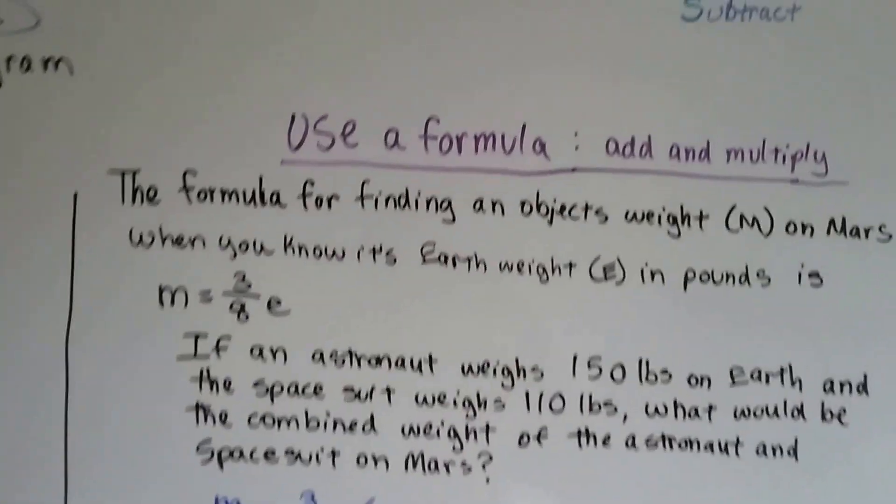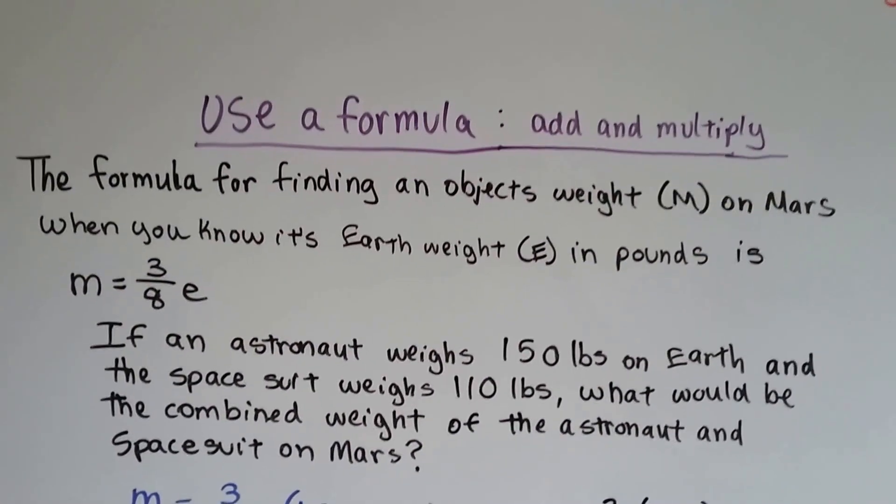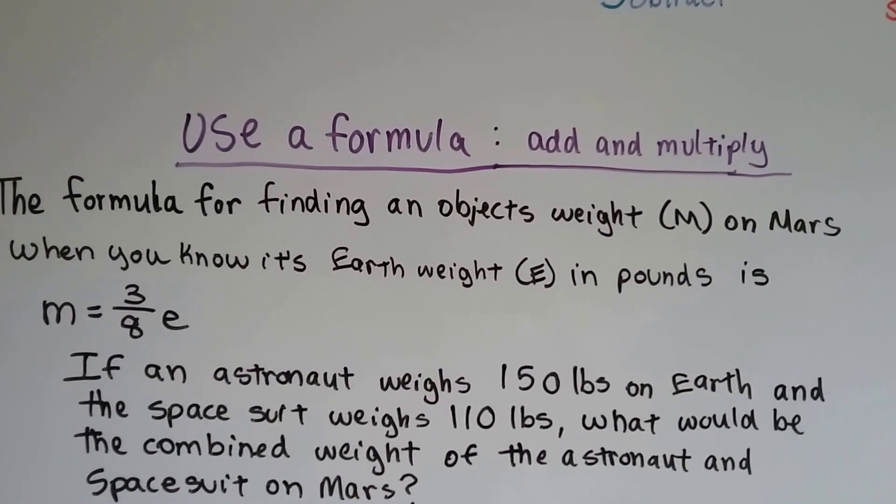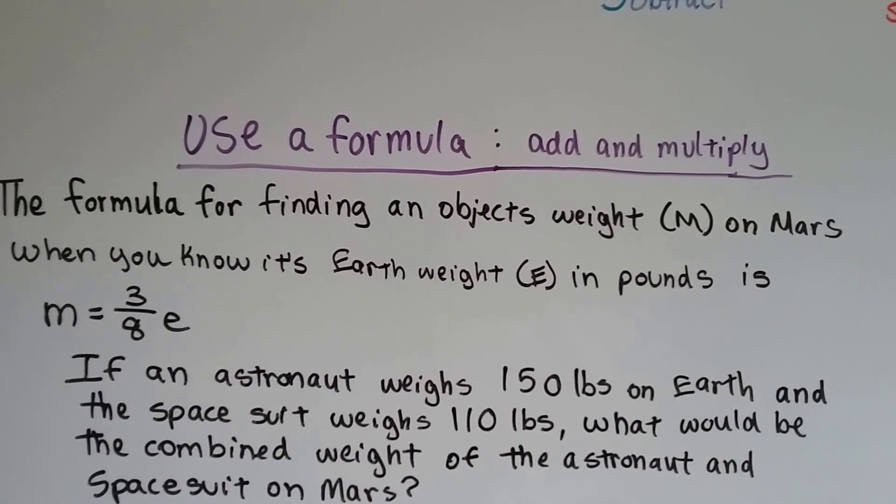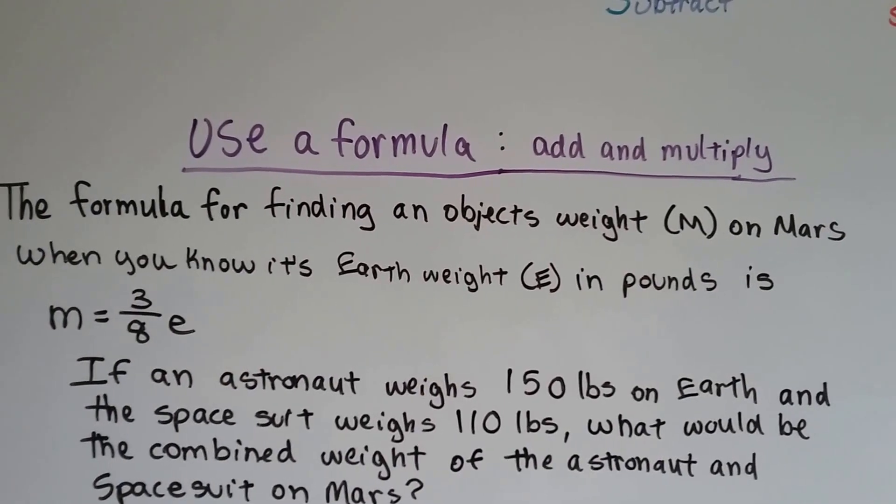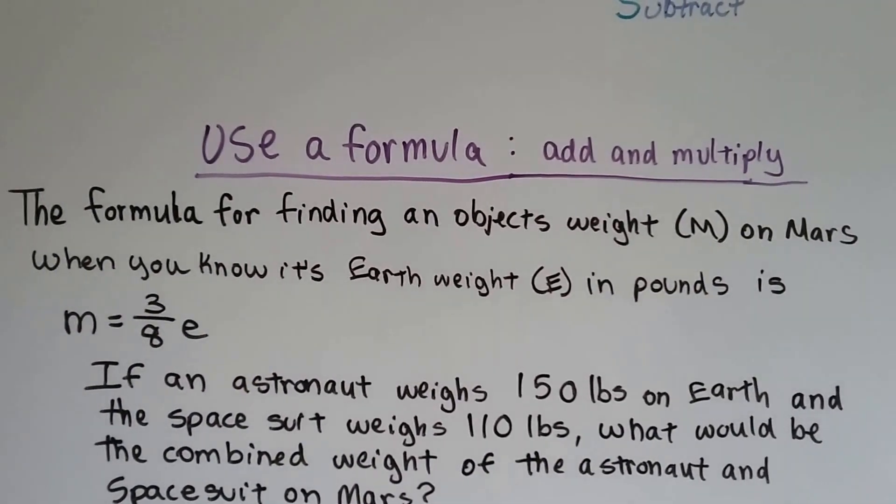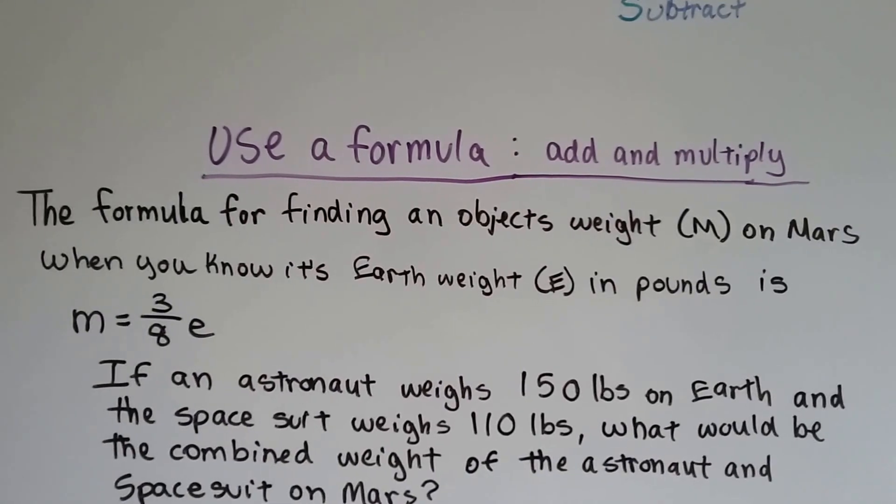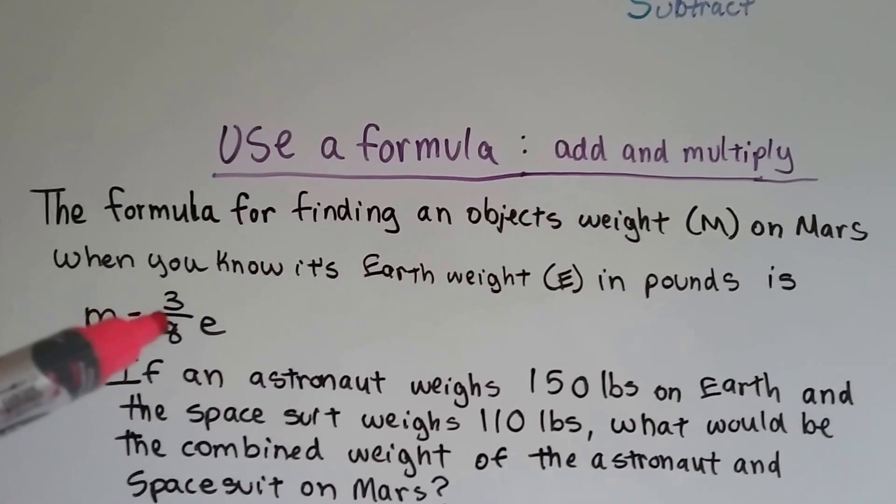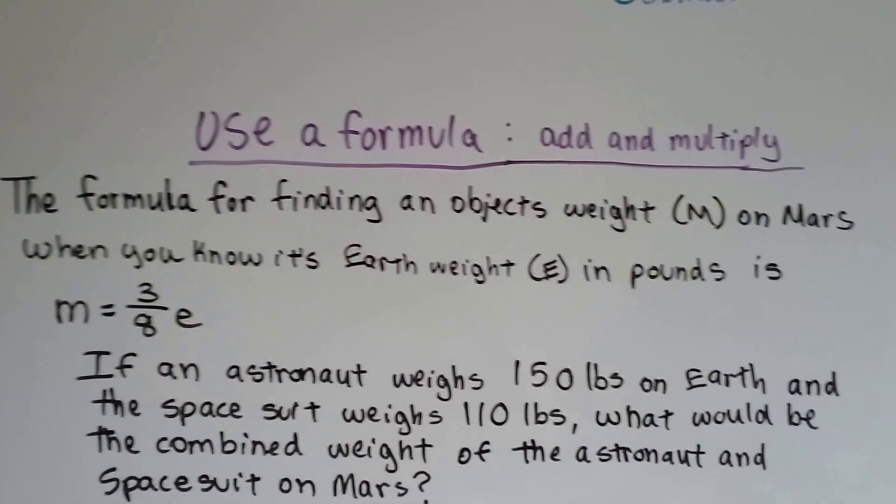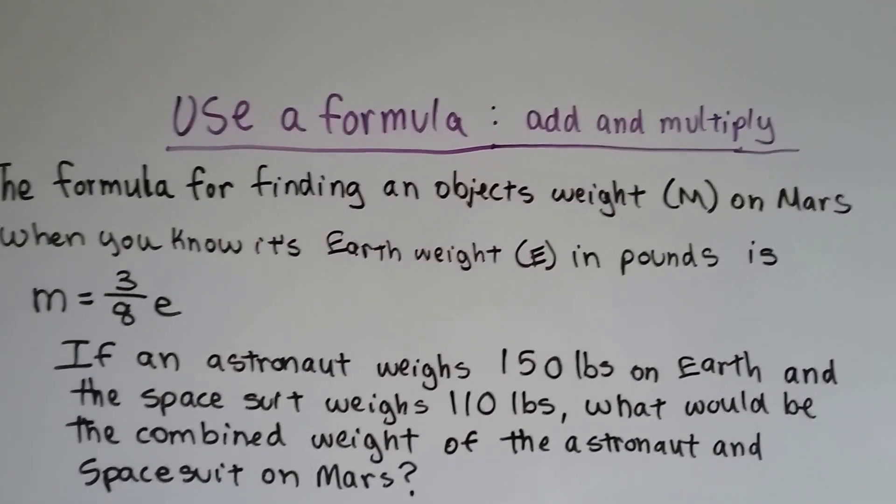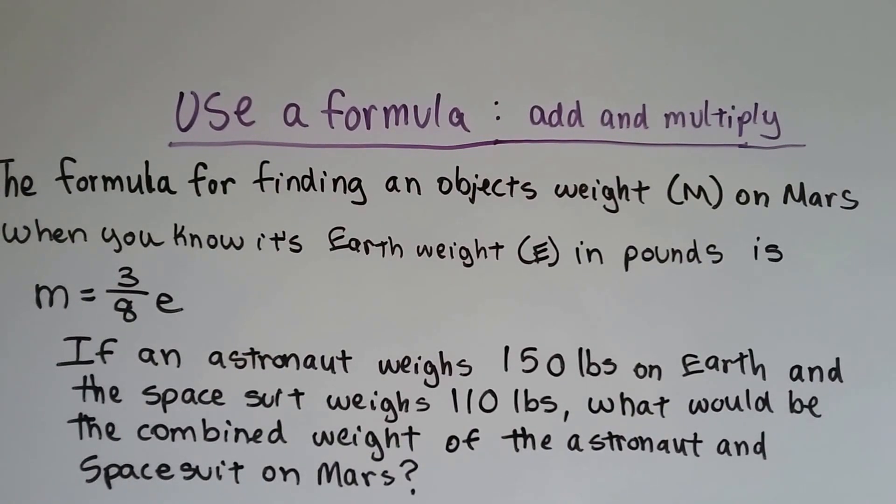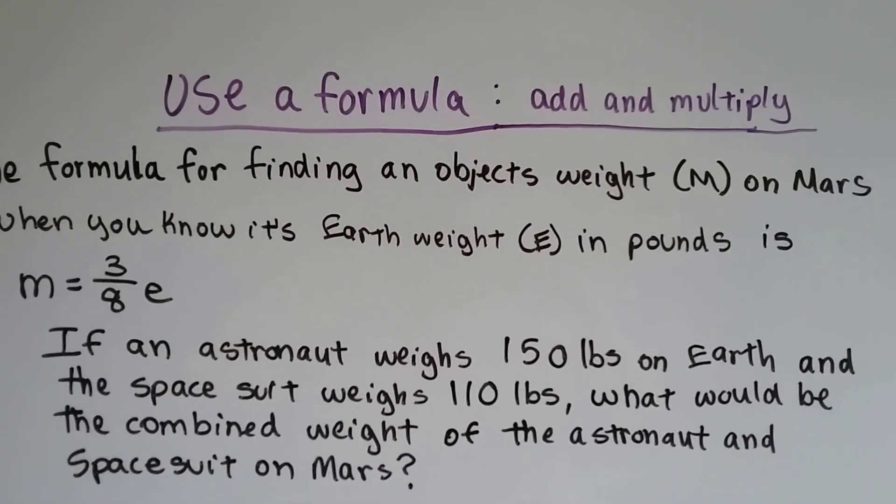Alright, here's using a formula and adding and multiplying. The formula for finding an object's weight on Mars, M, when you know its weight on Earth, E, in pounds, is M equals 3 eighths E. That means the Mars weight is equal to 3 eighths the Earth's weight. So if an astronaut weighs 150 pounds on Earth, and the spacesuit weighs 110 pounds, what would be the combined weight of the astronaut and the spacesuit on Mars?